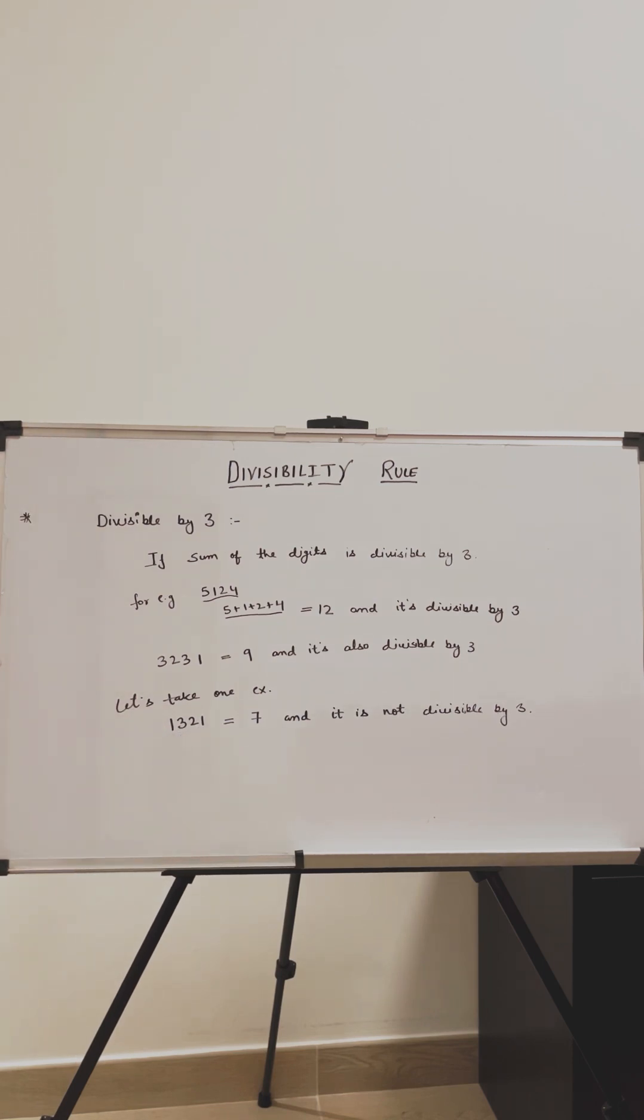But 7 is not divisible by 3. This means this whole number won't be divisible by 3.